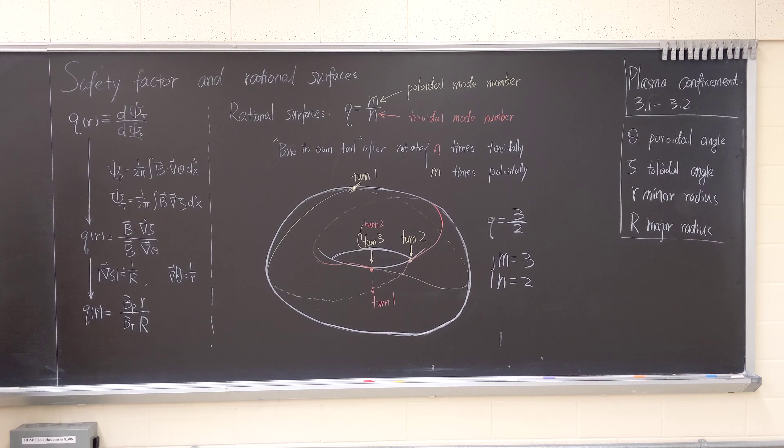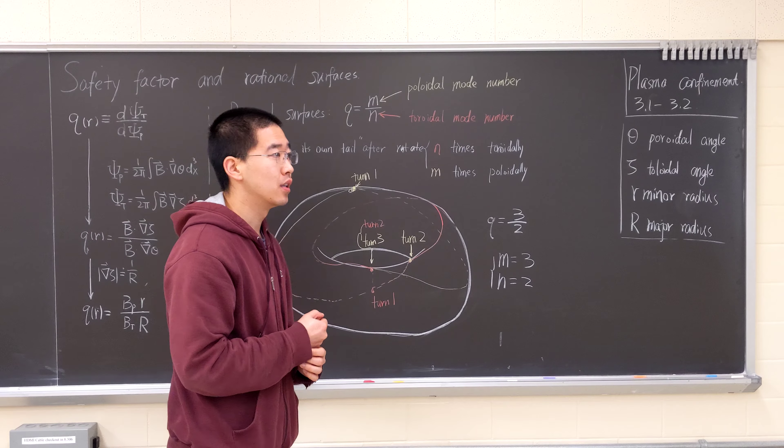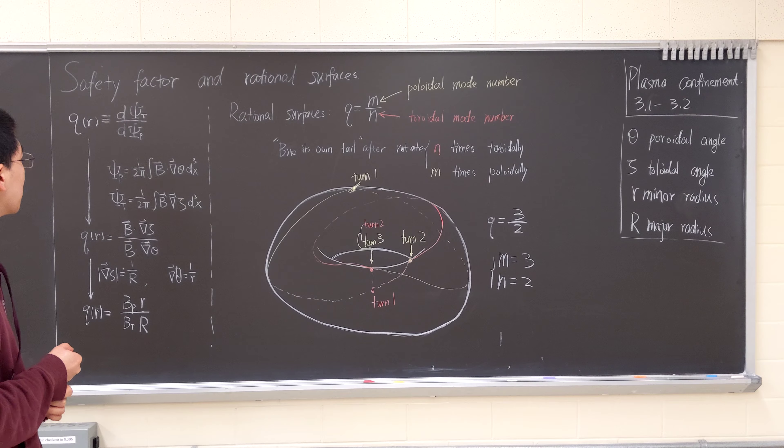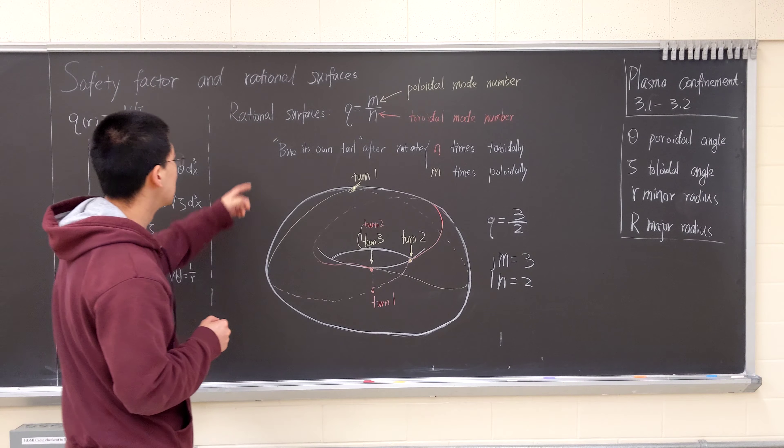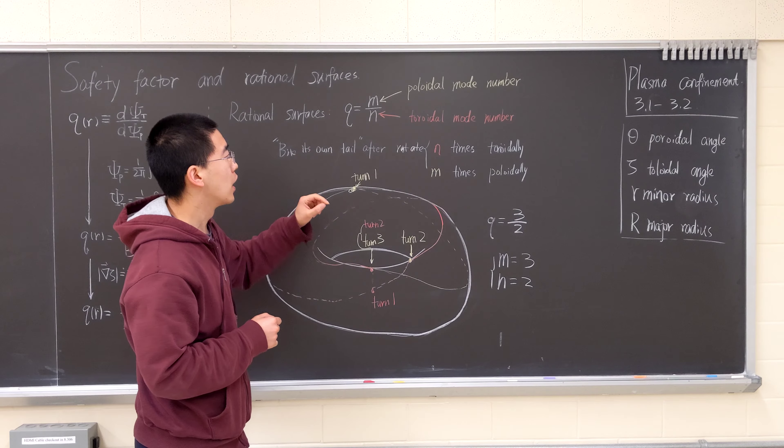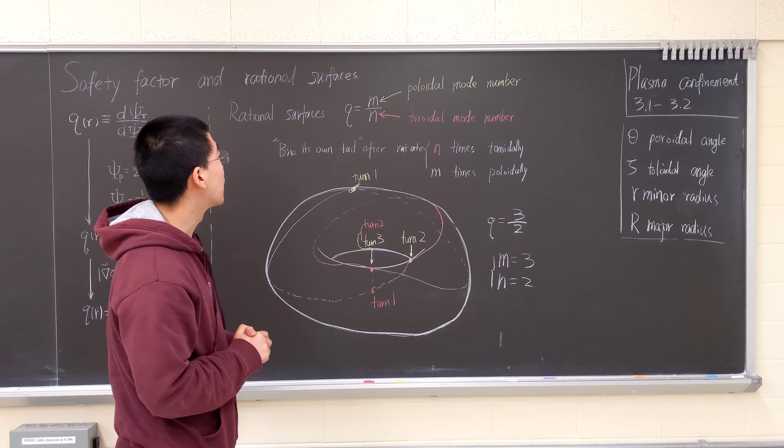Then we're left with a different expression for a safety factor. And another concept associated with the safety factor is rational surfaces: q equals m over n. M and n are integers. If they're integers, then we're on a rational surface.